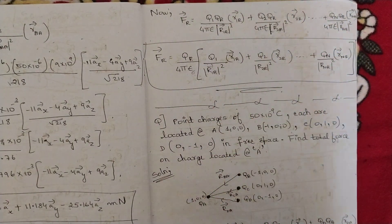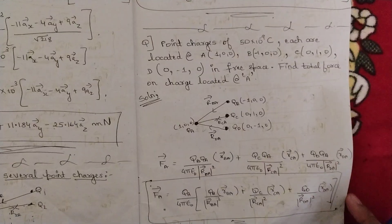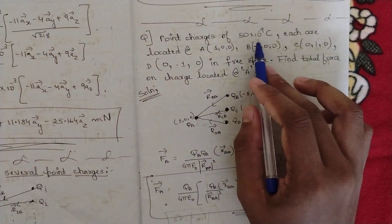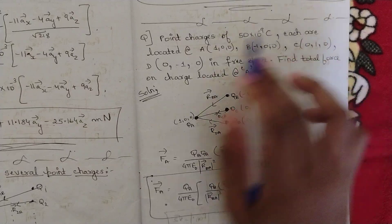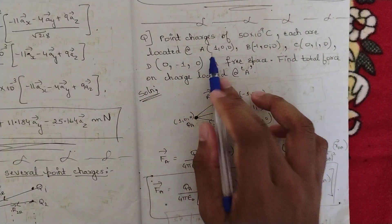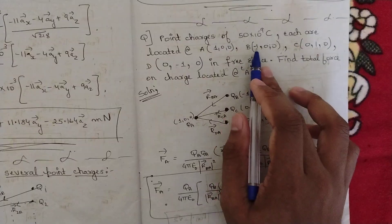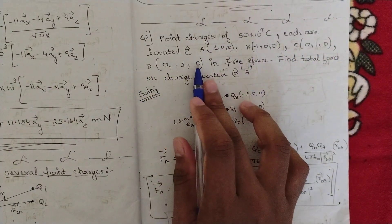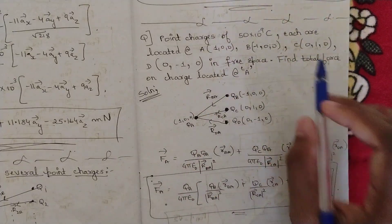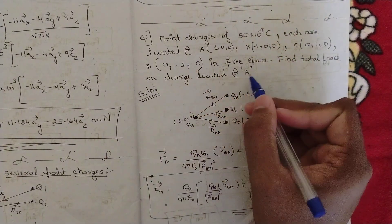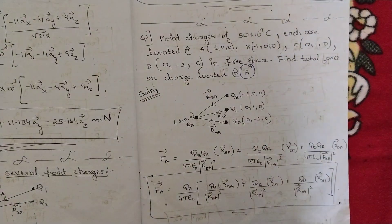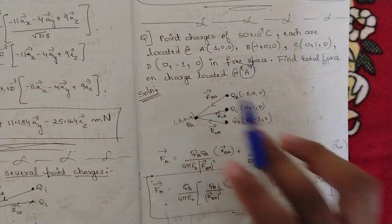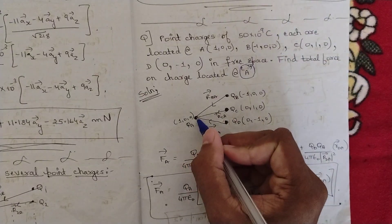Based on this equation let us solve one problem. Point charges of 50×10⁻⁹ coulombs each are located at A(1,0,0), B(−1,0,0), C(0,1,0), and D(0,−1,0) in free space. Find the total force on the charge located at A. We have specified that at point A we should find the total force on that charge.